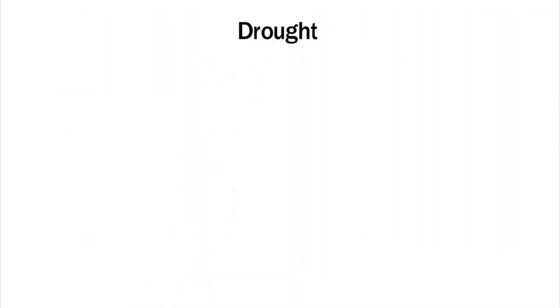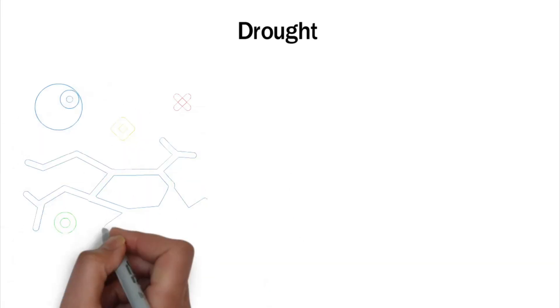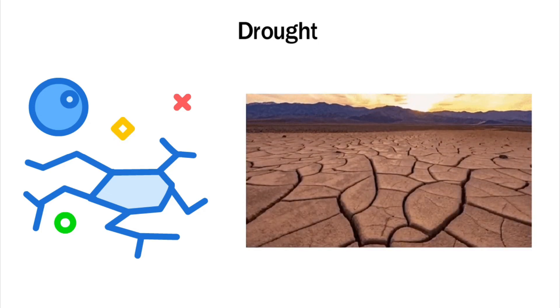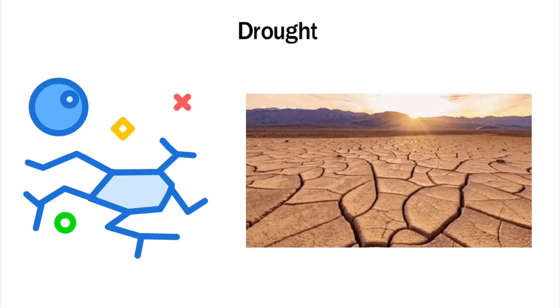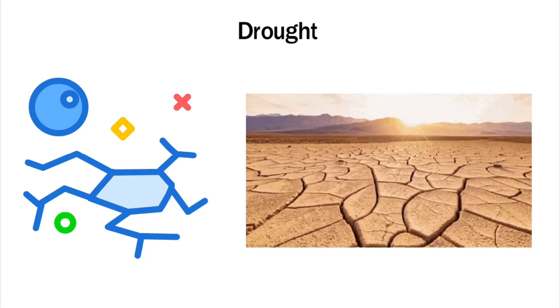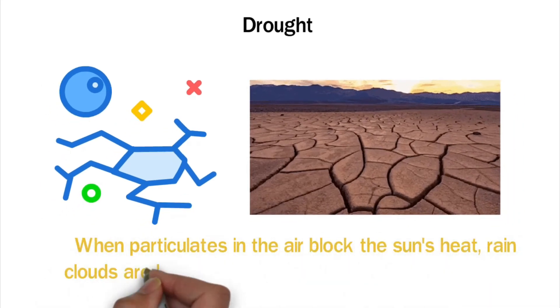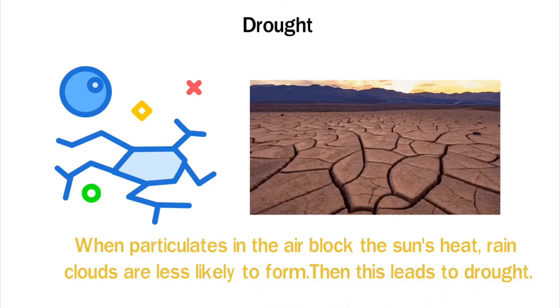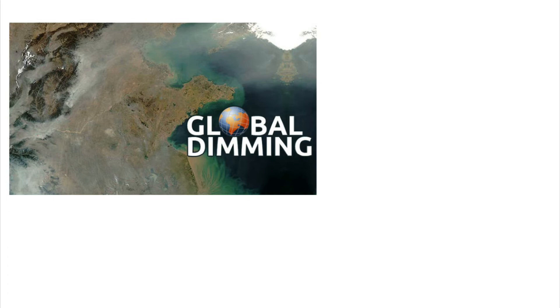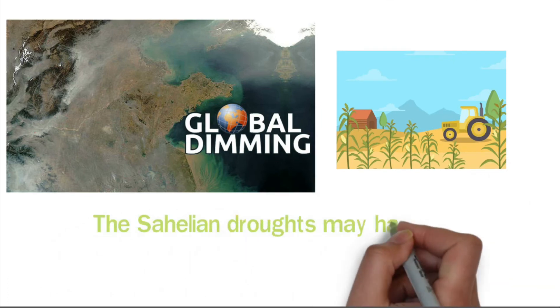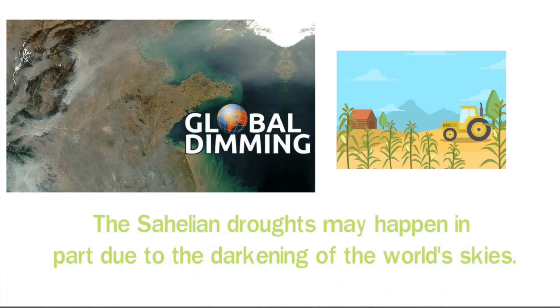Drought. Drought can happen when an area doesn't get enough rain for a long time. Many water droplets make clouds, and rain comes from clouds. Solar energy is needed for clouds to start to form. The sun's heat warms up water and large bodies of water, which makes it evaporate. When particulates in the air block the sun's heat, rain clouds are less likely to form, and this leads to drought. Many people have died because of global dimming. It has also changed ecological patterns in different parts of the world. In fact, some places are less able to grow food. The Sahelian droughts may happen in part due to the darkening of the world's skies.